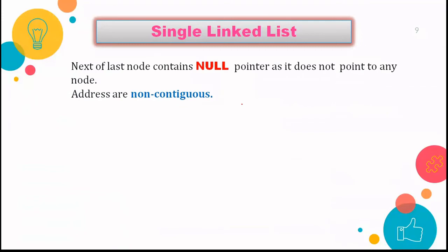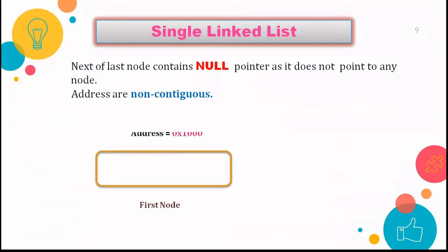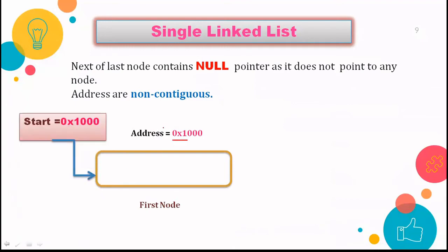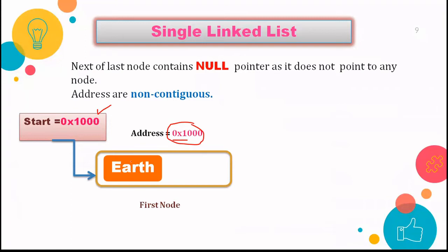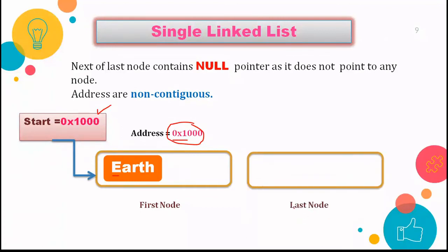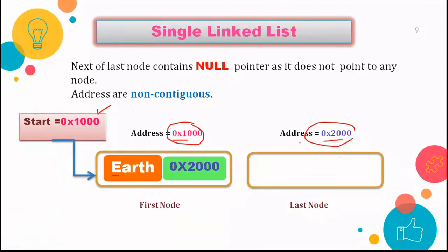Let's understand again with an example. This is the first node with its address, and we have a start pointer storing the address of the first node. Since planets are sorted alphabetically, Earth comes first, followed by another node. In the next part of the first node, the address of the second node — 2000 — is stored, and with the help of this address we can directly traverse to that node wherever it is in memory.